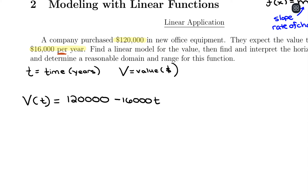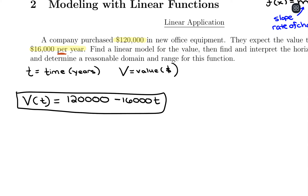So in terms of a linear function: V(t) = 120,000 − 16,000t. If time is 0, the value is $120,000. If we plug in t = 1, so one year has passed, we're taking out $16,000. If two years have passed, we take out $32,000. So that's working exactly how we want it to, and we've answered the first part — finding the linear model.